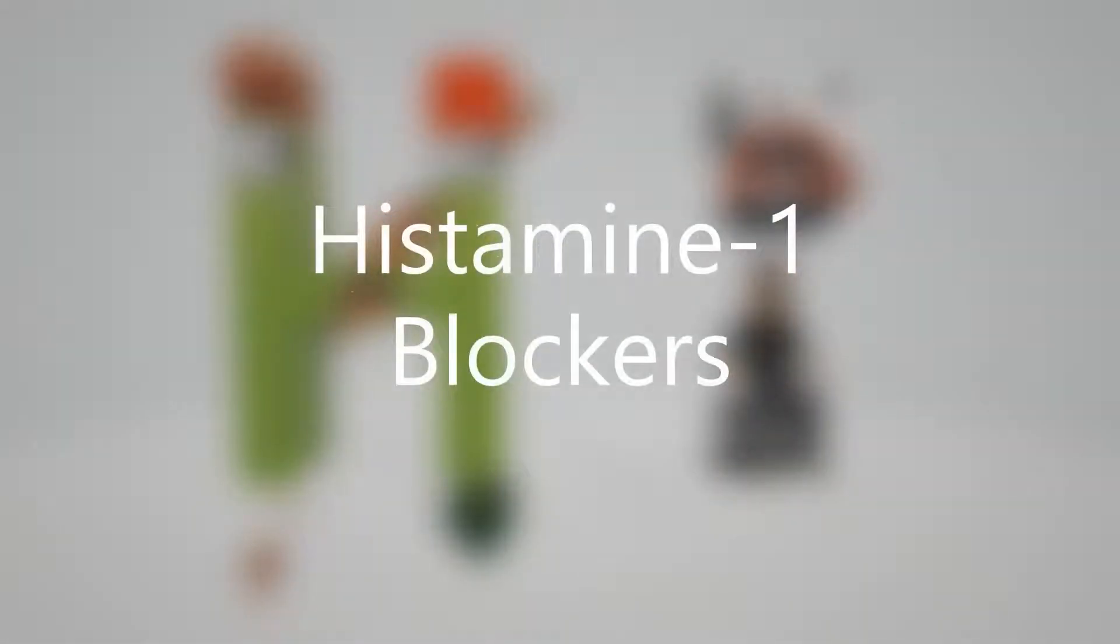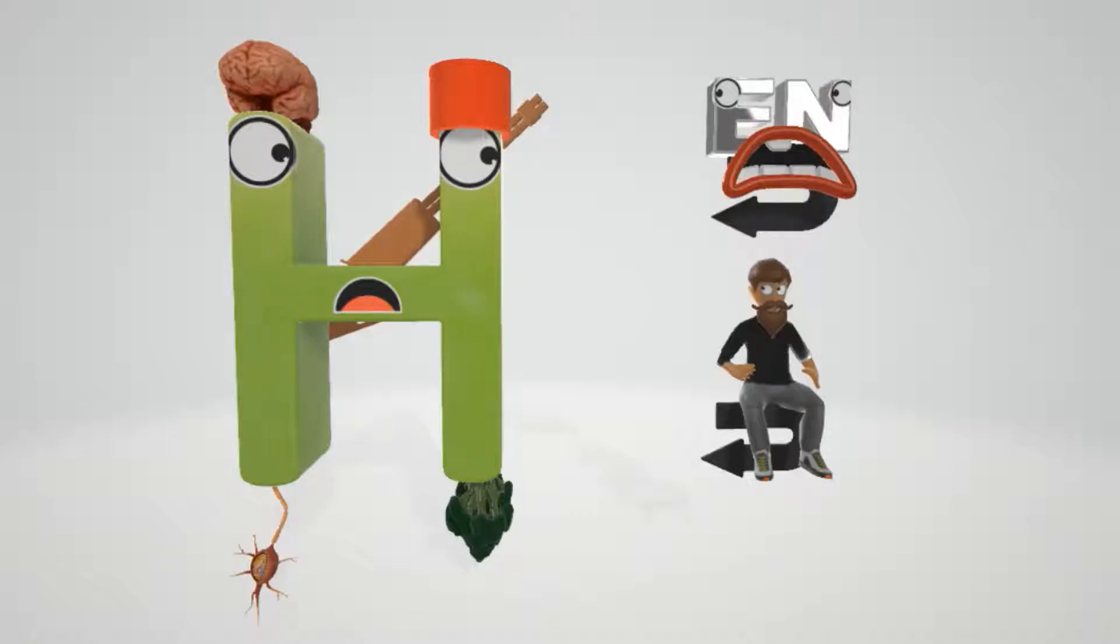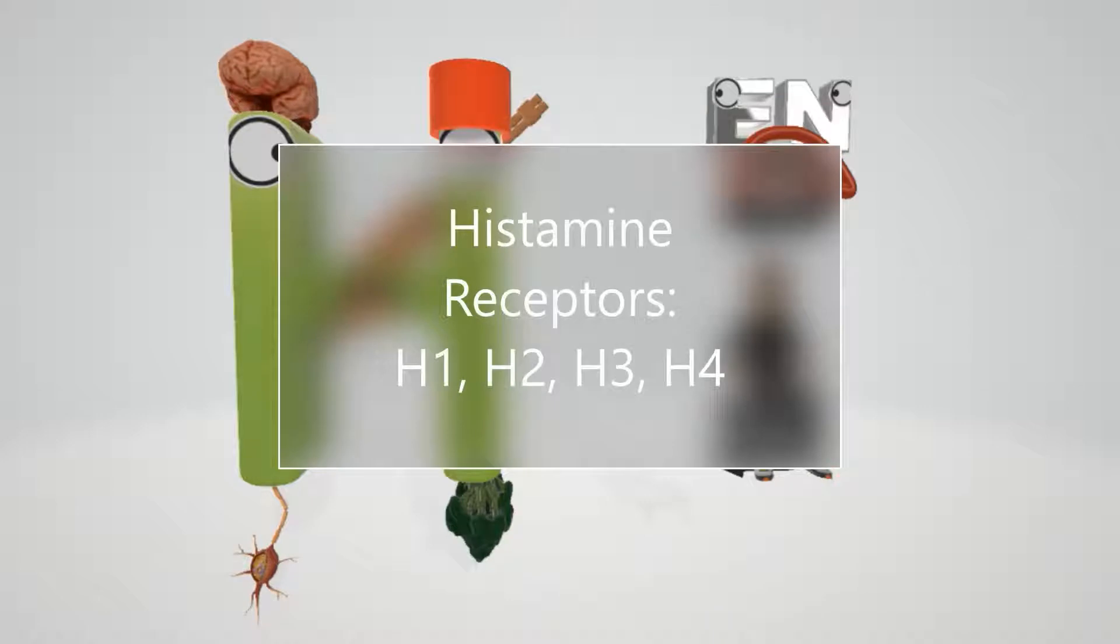In this video we're going to talk about histamine 1 blockers, H1 blockers. Before we talk about the blockers, let's talk about the H1 receptor. There are different types of histamine receptors: H1, H2, H3, H4. We're going to focus on H1 blockers in this video.